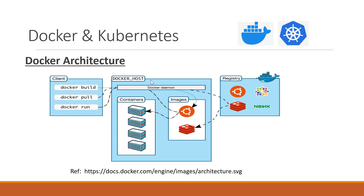The Docker host is the machine where the Docker daemon is up and running. This daemon accepts requests from the Docker client and processes them. There are multiple ways a client can send requests to the Docker daemon: we can execute Docker commands, use Docker Compose, or send requests directly via REST API.